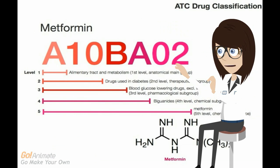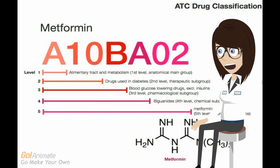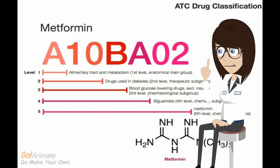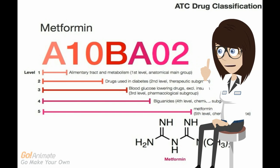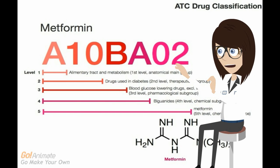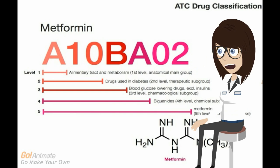Let's take metformin as our example. Metformin falls under the alimentary tract and metabolism category — that is the first level, with an 'A' code. Metformin is used in the treatment of diabetes, and this therapeutic use falls under the second level subgroup 10.